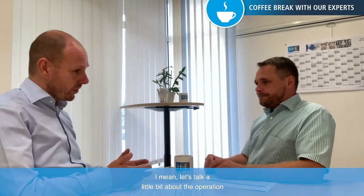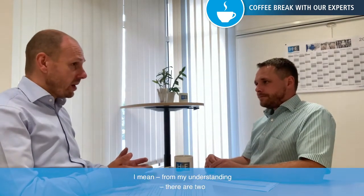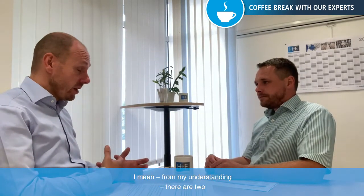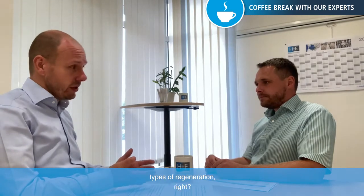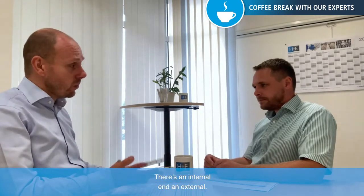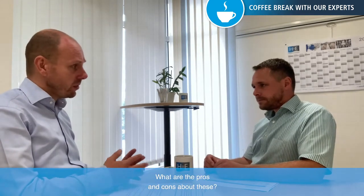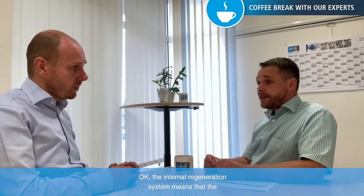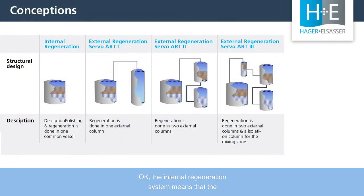Let's talk a little bit about operation. From my understanding, there are two types of regeneration — internal and external. What are the pros and cons of these? The internal regeneration system means that the regeneration process is carried out internally within the mixed bed vessel, within the water-steam cycle.